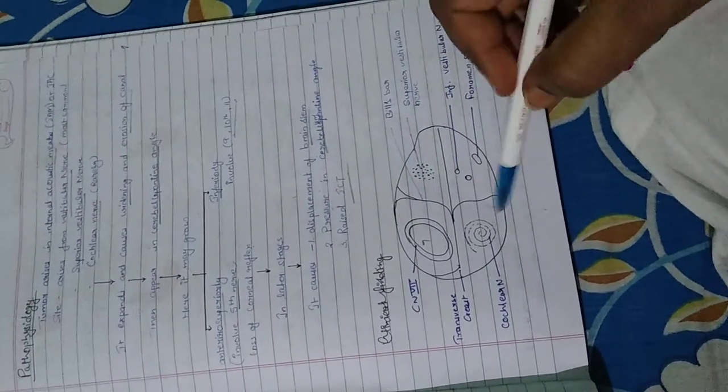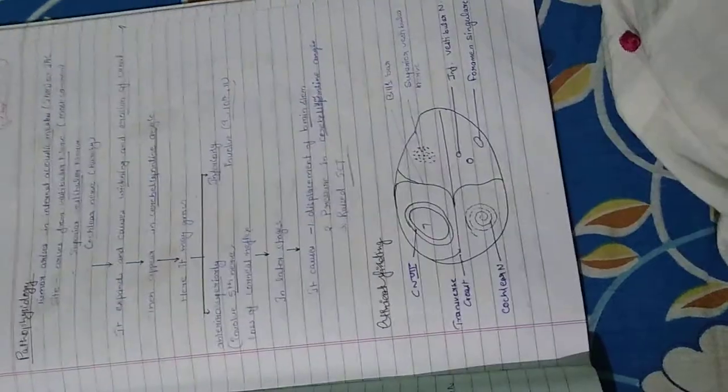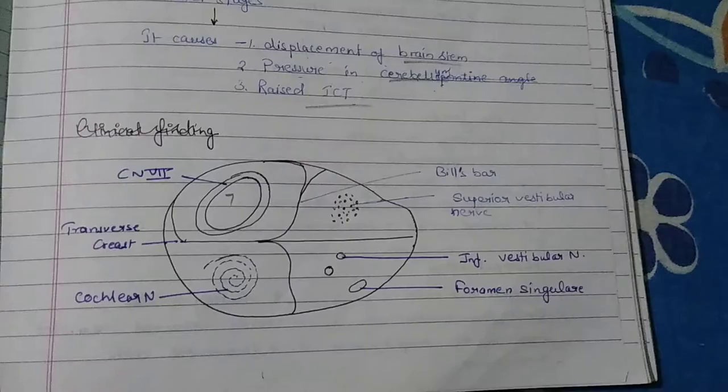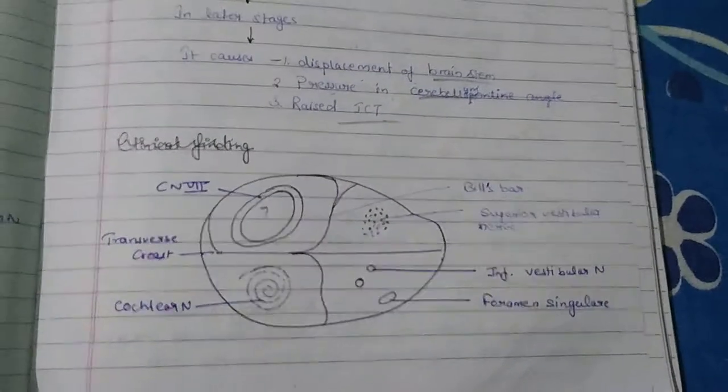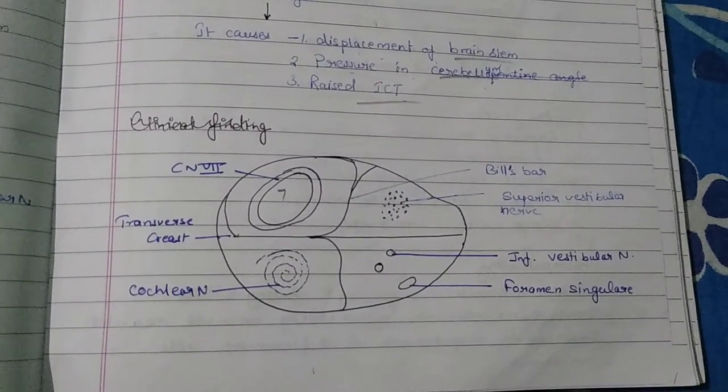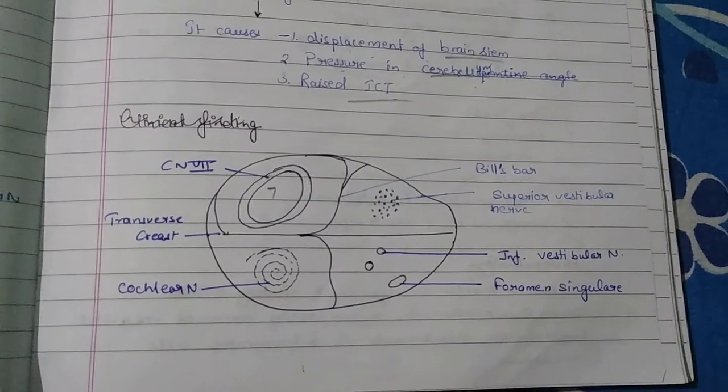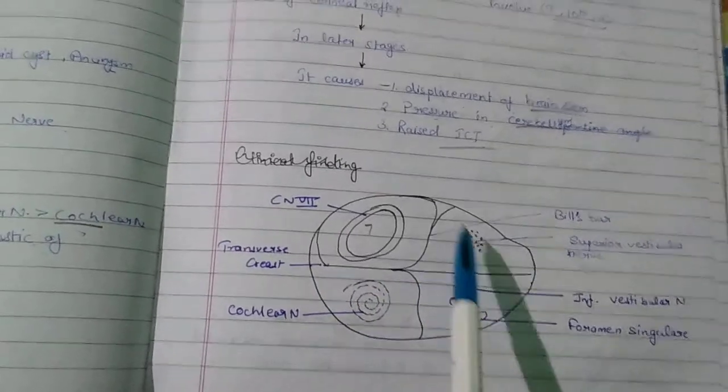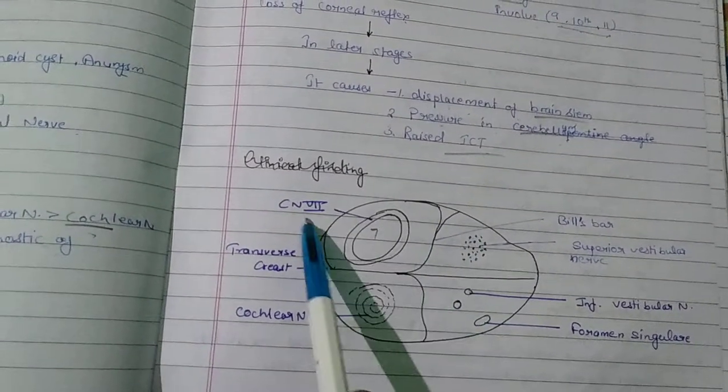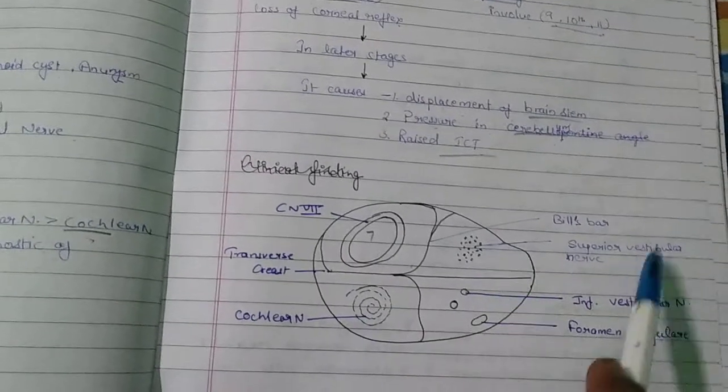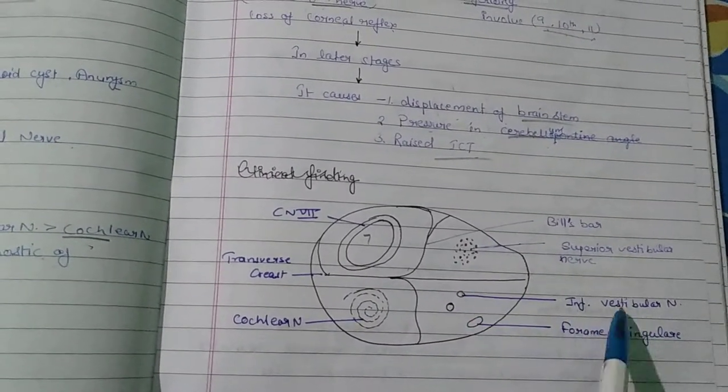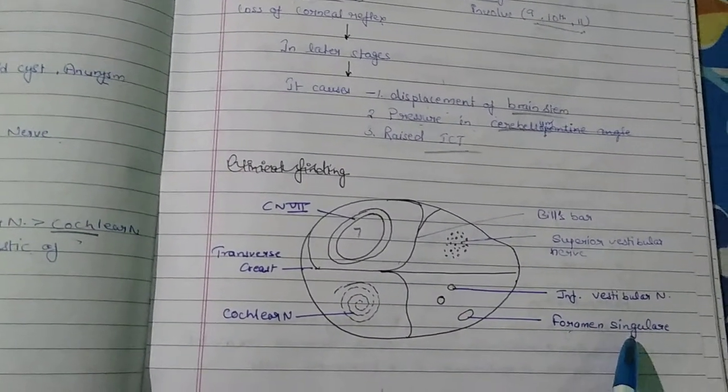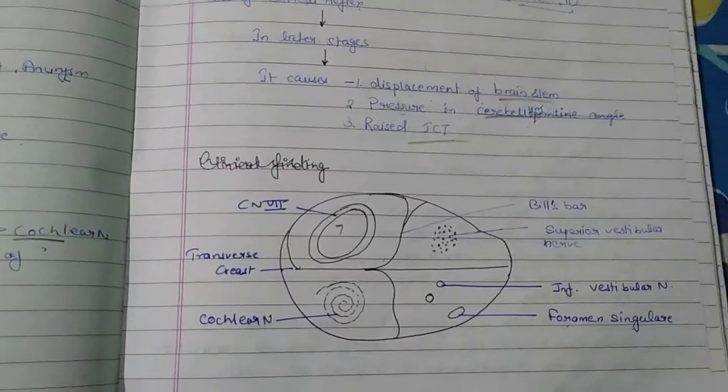The diagram shows the inner aspect of the internal auditory canal. This is a transverse crest and Bill's bar. Here is the 7th nerve, cochlear nerve, superior vestibular nerve, inferior vestibular nerve, and foramen singulare through which structures pass in the internal auditory canal.